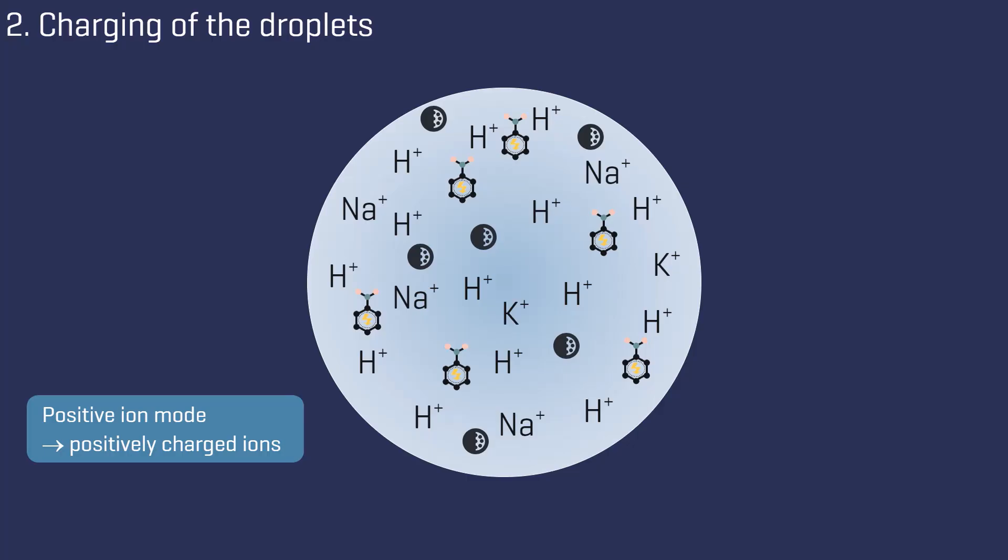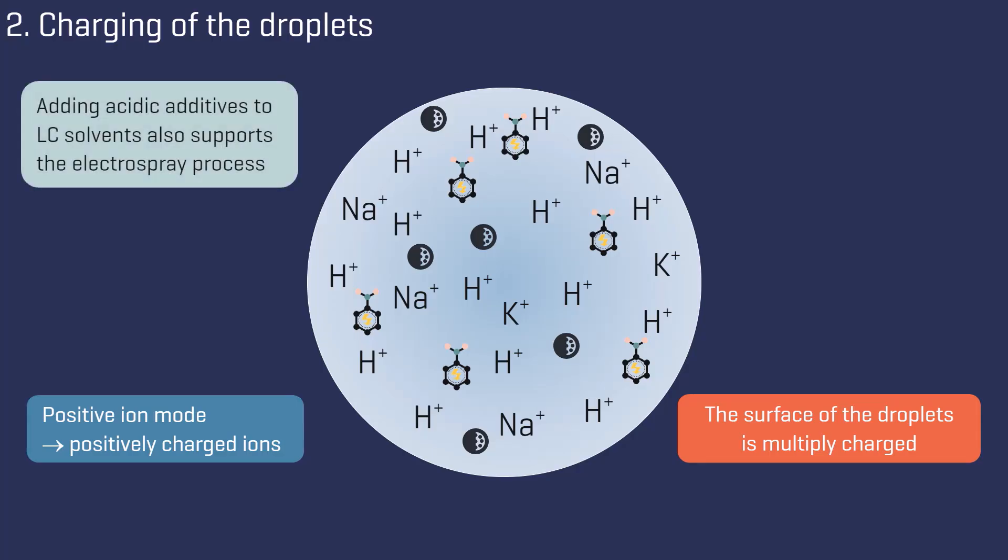But the analytes and matrix molecules also contribute to this charging of the droplets. As a result, each droplet has multiple charges on its surface, which is an important fact for the ESI process, as we will see next. Adding acidic additives, like formic acid, to LC solvents, therefore, not only improves chromatographic resolution, but also supports the electrospray process in the positive ion mode.